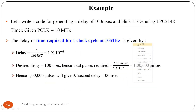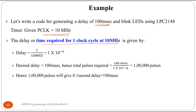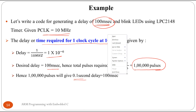Let's write code to generate a 100 millisecond delay and blink LEDs using the LPC2148 timer. Given a peripheral clock of 10 megahertz, the time for one clock cycle is 1 divided by 10 MHz, which equals 100 nanoseconds. To get 100 milliseconds, we divide 100ms by 100ns, giving 1,000,000 clock pulses needed to generate the 100 millisecond delay.